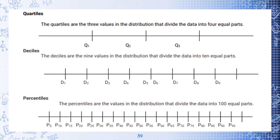To summarize: Quartiles are the three values that divide a distribution into four equal parts — Q1 = 25%, Q2 = 50%, Q3 = 75%. Deciles are the nine values that divide the data into 10 equal parts — D1 = 10%, D2 = 20%, up to D9 = 90%. Note that D5 is equivalent to Q2. Percentiles are the values that divide the data into 100 equal parts — P1 = 1%, P2 = 2%, and so on. That's all, sweeties. Thank you for watching. See you in the next video.